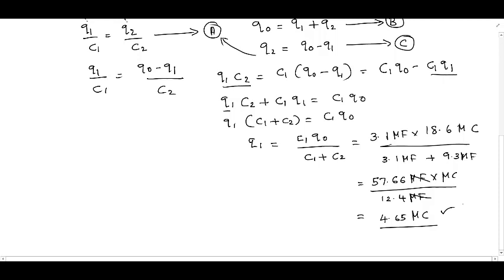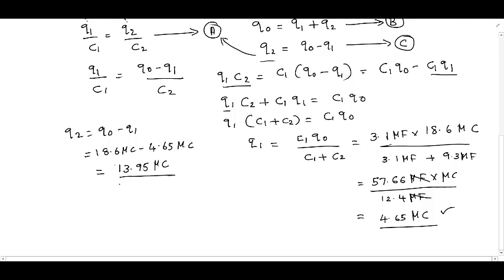To get Q2, we use equation C: Q2 equals Q0 minus Q1, which is 18.6 microcoulombs minus 4.65 microcoulombs. Now we have the complete solution for Q1 and Q2, the charge on each capacitor at equilibrium.